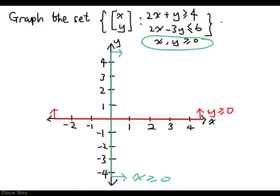Remember we are trying to draw the line 2x plus y equal to 4. So when y is 0, x is 2. And when x is 0, y is 4.